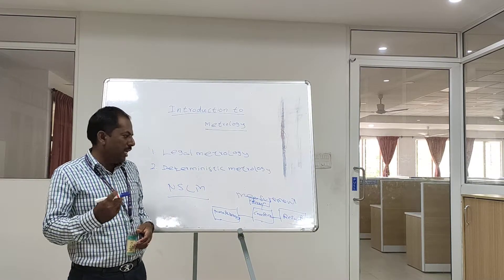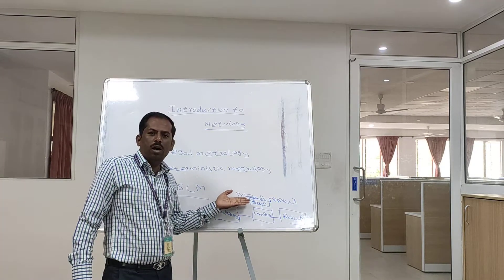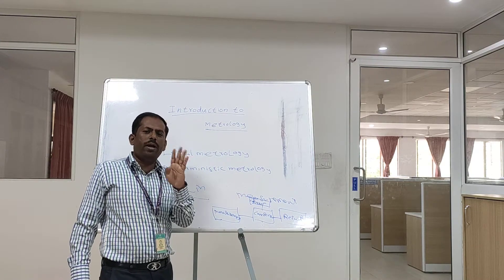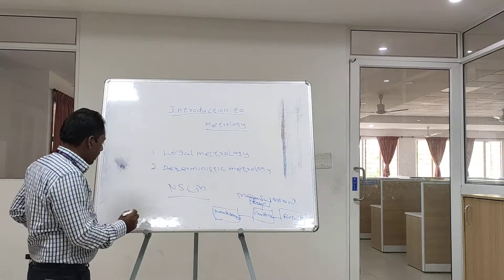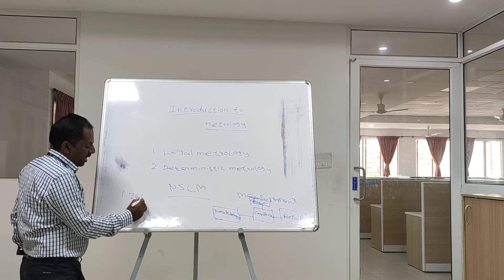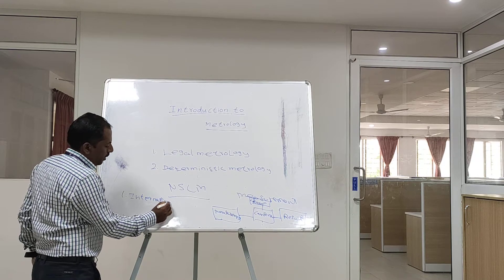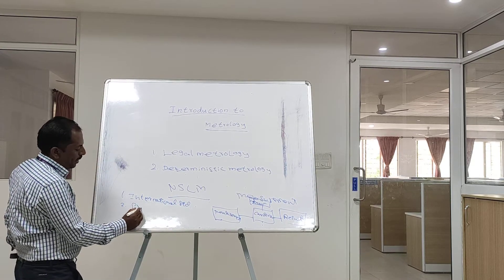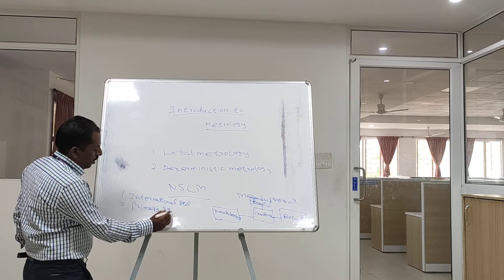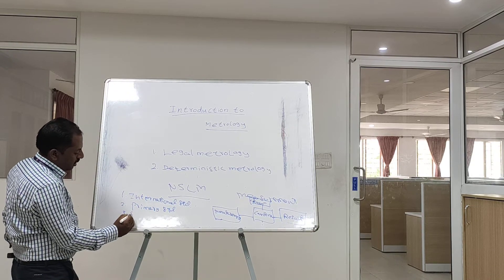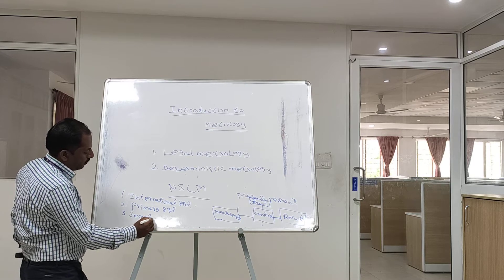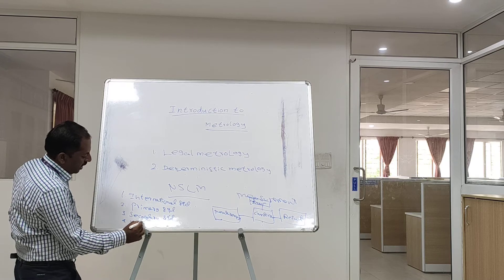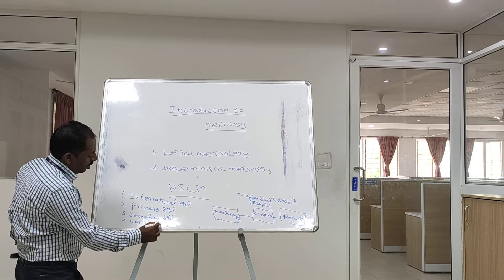There are four main types of known standards available. The first is called the international standard. The second is the primary standard. The third is the secondary standard. The fourth is the working standard.